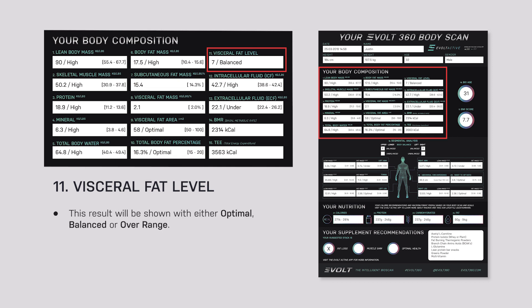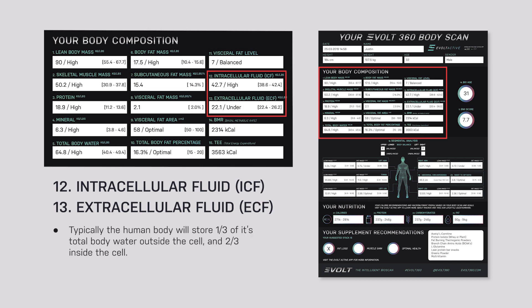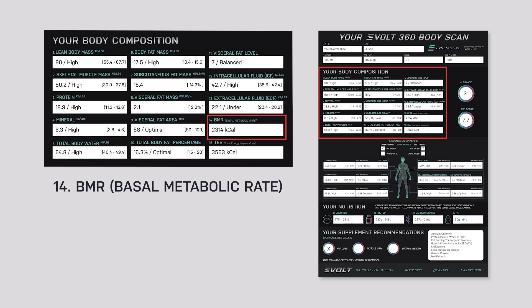The visceral fat area will also give you a visceral fat level, shown as optimal, balanced, or over range. Then we come down to intra and extracellular fluid — this is associated with where your total body water is stored, whether inside or outside the cell. Typically, the human body stores one-third of its total body water outside the cell and two-thirds inside the cell. Inside the cell is what makes up our muscle mass.